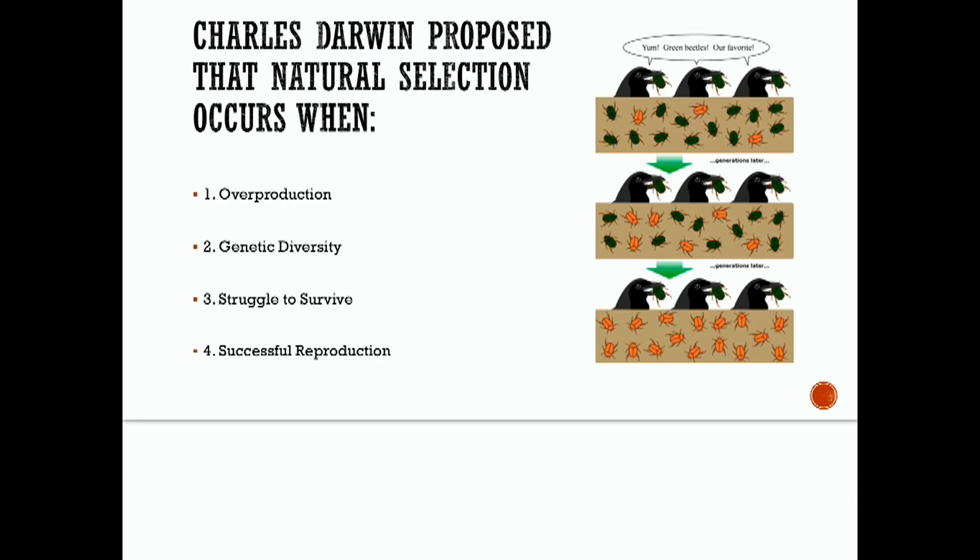Overproduction: a species produces more offspring than will survive to maturity. Genetic diversity: the individuals within the species population are all genetically slightly different from each other. Number three, struggle to survive: individuals of the population must struggle to access resources or avoid predators. And number four, successful reproduction: individuals that are successful at surviving are able to reproduce and pass their genes on to their offspring.